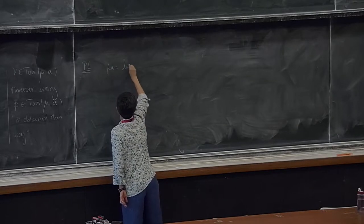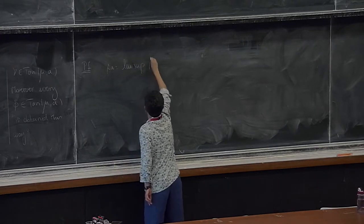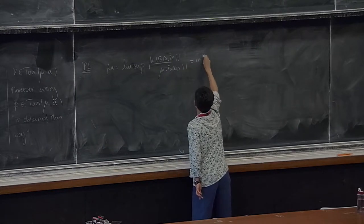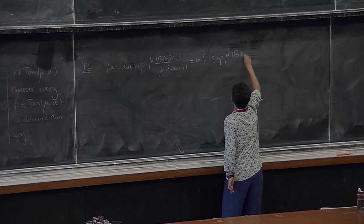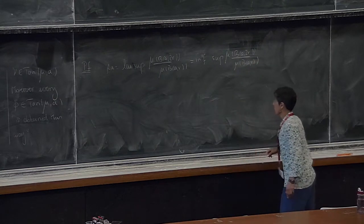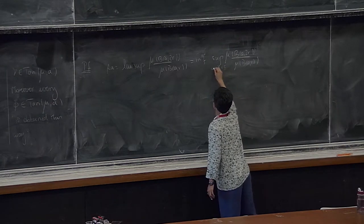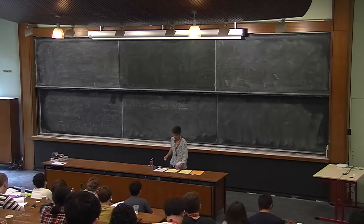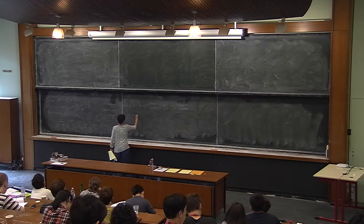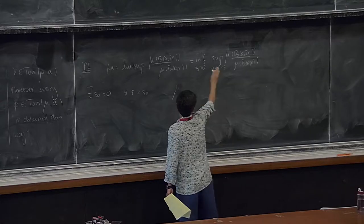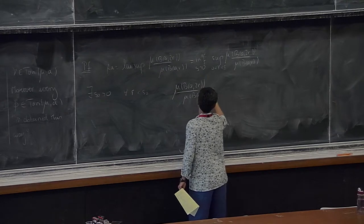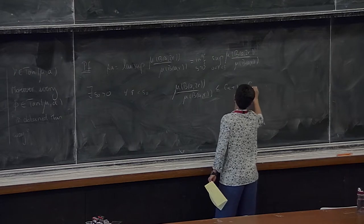So I take this number C_sub_a. I remind you what this number is—it's a limsup, so it's an inf of a sup of the same thing. Since this is less than C_a, there exists an s_0 positive such that for every r less than s_0, we have the sup is less—therefore mu of B(a, 2r) over mu of B(a, r) is less than or equal to C_a plus 1, which I conveniently call C_a prime.